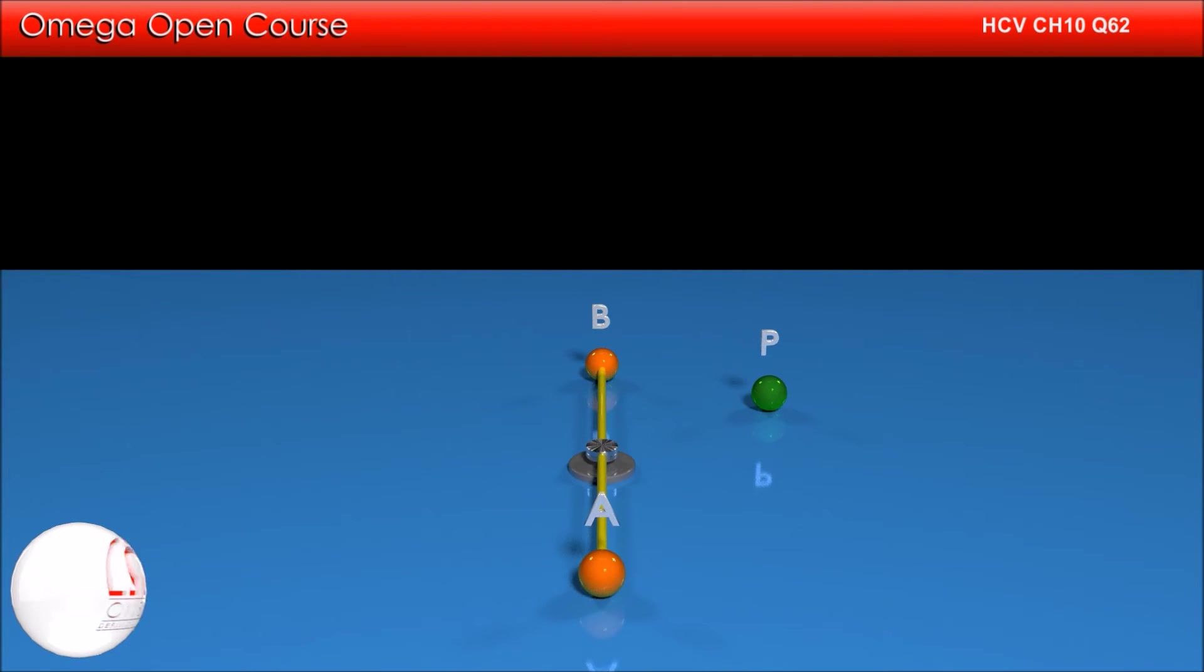Since there is no external torque acting on the system, the angular momentum of the system must be conserved. As the system is in pure rotation, both before and after collision, the angular momentum of the system is moment of inertia times angular speed.